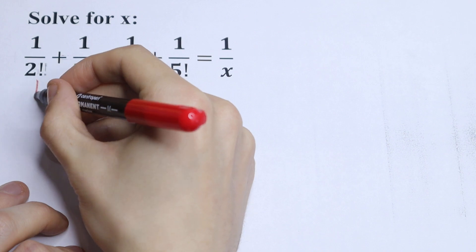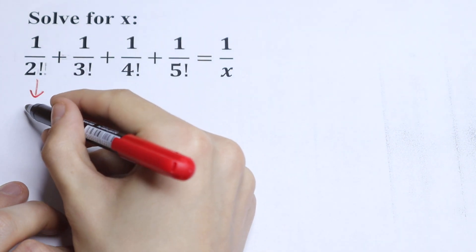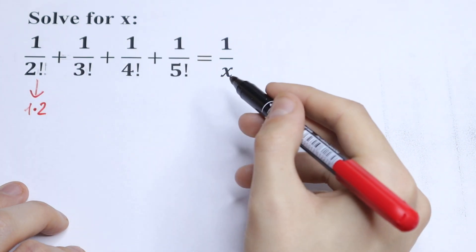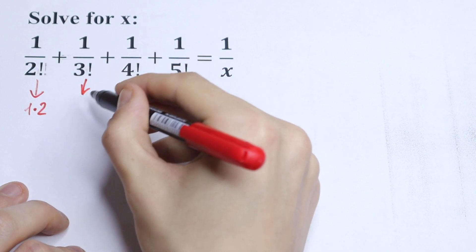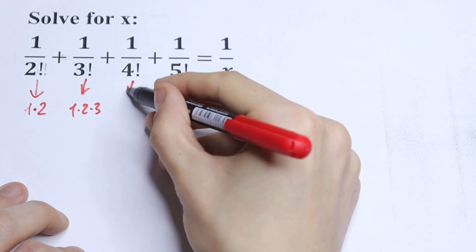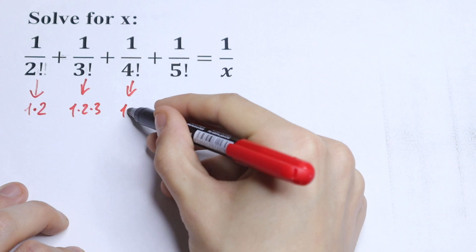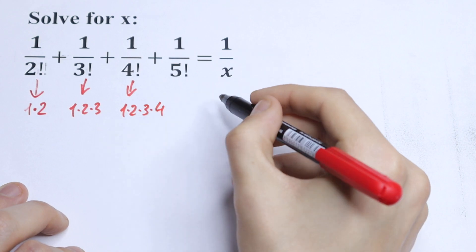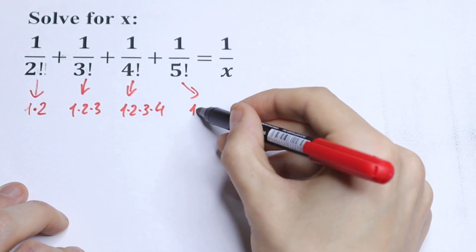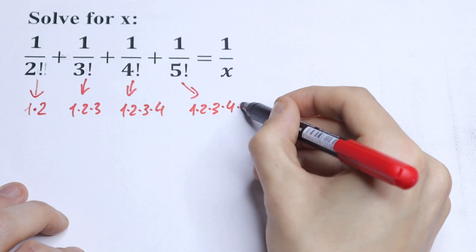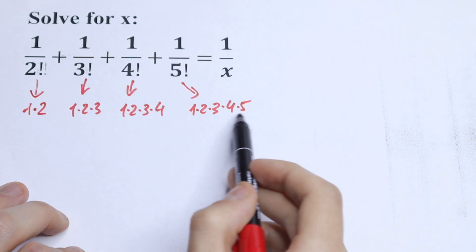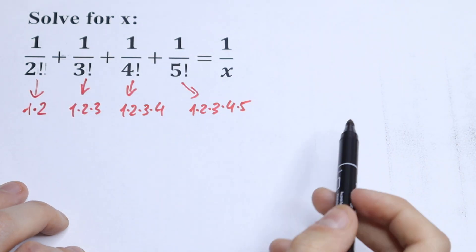But take a look. This 2 factorial is a product from 1 to 2, so 1 times 2. This 3 factorial is a product 1 times 2 times 3. This 4 factorial is 1 times 2 times 3 times 4. And the next is 1 times 2 times 3 times 4 times 5 — a product from 1 to 5.